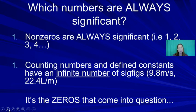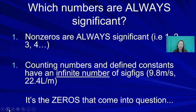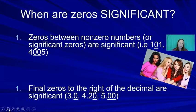When determining significant digits, we ask which numbers matter. Non-zero digits (1–9) are always significant. Counting numbers and defined constants — like the acceleration due to gravity, 9.8 m/s² — are considered to have infinite significant figures and do not control the number of sig figs in your answer. Conversion factors and known values are treated the same way.